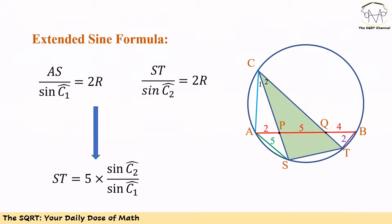To solve this problem we are going to use the extended sine formula. Based on this formula, AS over sine of C1 is equal to 2R, where R is the radius of the circle. We also know that ST over sine of C2 is equal to 2R.